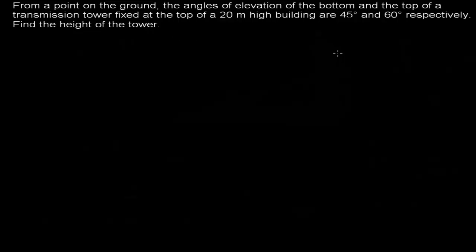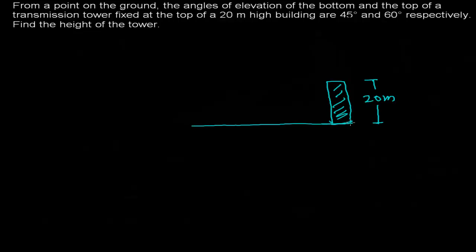As I understand, here we have a 20-meter high building. So let me suppose this is my 20-meter high building — the height of this building is 20 meters, and this is my ground level. On top of this 20-meter high building, I have a tower, and I need to find out the height of this tower.